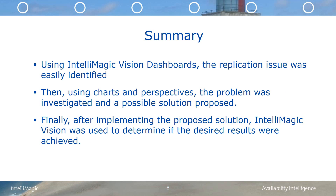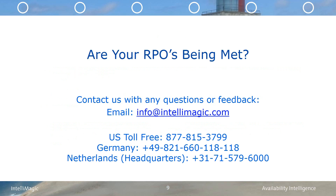In summary, we used the dashboards in Intellimagic Vision for ZOS tape to identify that there was a replication issue. Then, using the various drill-downs and perspectives available in Intellimagic Vision, we were able to investigate the problem and see some advice on possible solutions. After any changes made, you would want to examine the dashboards and charts again to verify that the desired results were achieved. If not, then further investigation may be required. In conclusion, Intellimagic Vision was used to identify replication issues within a TS7700 grid. Intellimagic Vision uses expert knowledge about systems, configuration, and workload to proactively identify potential risks in your environment. If you would like to find out more about Intellimagic Vision for your environment, please send an email to info at intellimagic.com.